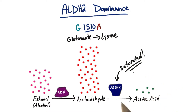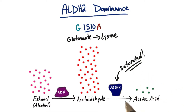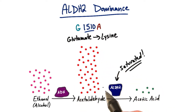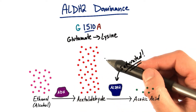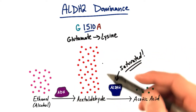Because the ALDH2 enzyme is less active, it becomes saturated much sooner than normal, and there's a buildup of acetaldehyde and the exhibition of symptoms of alcohol flush reaction.